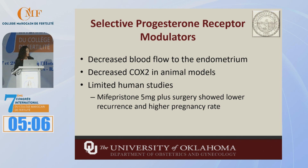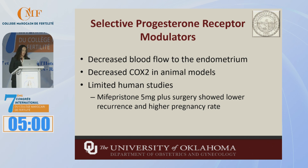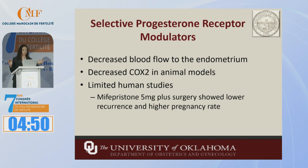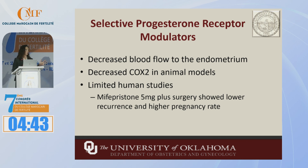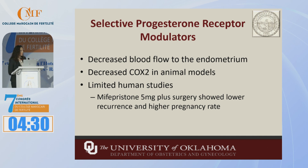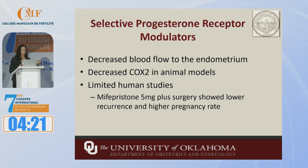The last one is selective progesterone receptor modulators, which was another option that looked really promising. They work by decreasing blood flow to the endometrium and decreasing COX-2, though that has only been shown in animal studies. There are very limited human studies, mostly from several years ago, but some showed that mifepristone five milligrams plus surgery showed lower recurrence rates and higher pregnancy rates. The biggest problem is there's no current research ongoing, so we need human study research in this area.